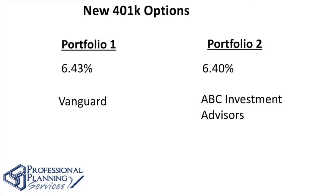Lastly, another piece of information is disclosed: Vanguard is known for low fees, typically between 20 and 40 basis points — a basis point being a percentage less than 1%. Portfolio Two has average fees of 1.5%. With this additional information, unanimously everybody says Portfolio One. I don't even know who you are watching this video, and I can venture to say you probably have Portfolio One.